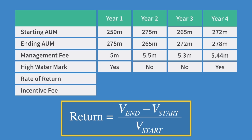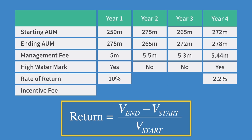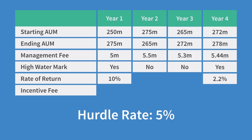Now we can calculate the rate of return for each year using the basic percentage change formula: ending value minus starting value divided by starting value. In year 1 we have 275 minus 250 over 250, which is 10%. We can skip years 2 and 3 because they missed the watermark — this is where a routine saves you time in the exam. In year 4 we have 278 minus 272 over 272, which is a return of 2.2%. Now remember we have a hurdle rate of 5% before we earn incentive fees. Although in year 1 we passed and will be earning incentive fees, in year 4, despite beating the watermark, we didn't earn enough profit to reach the hurdle rate, so our incentive fees are halted.